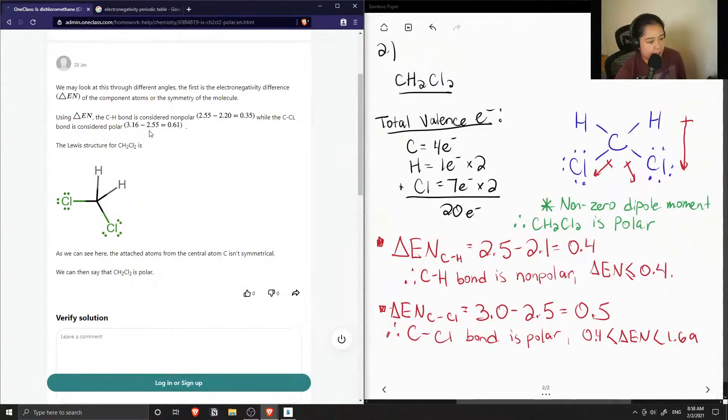Yeah, so they had a much different electronegativity value for the chlorine and you can see that its difference is around 0.61. It just depends on which reference you use. So they drew out the Lewis structure.